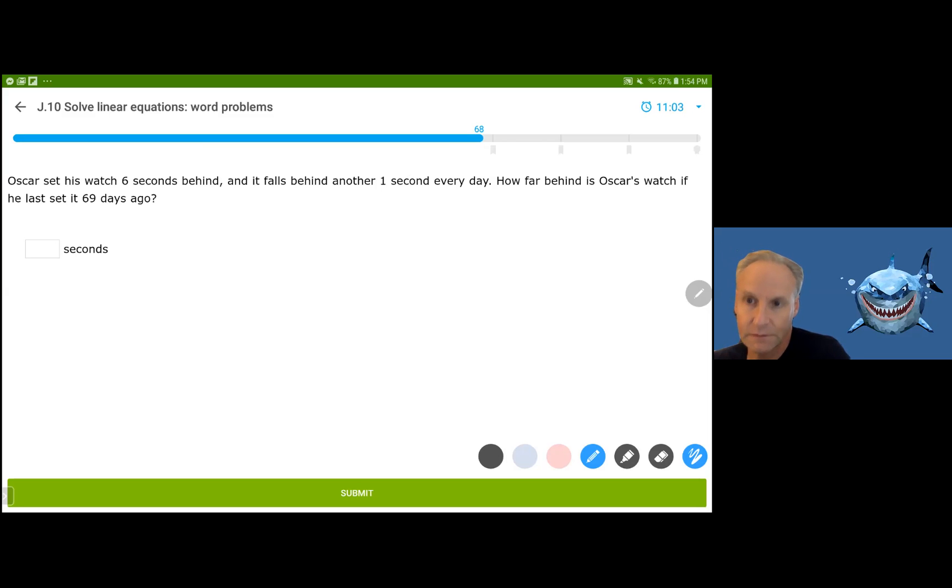Oscar set his watch six seconds behind. If it falls behind another one second every day, how far behind is Oscar's watch if he last set it 69 days ago? Well, the 69 plus the six, I mean, that's clear, but I want you to be able to write the function for this. So let's see, this is going to be lost time. So the total lost time, depending on how many days go by is equal to, this is going to be lost time. So it's six seconds behind. And then he's going to also lose one second every day. These are both really negative values. So we could talk about it as being negatives, or you could talk about time lost, or you could talk about what is his, how does his time register in a zero or a positive sense. Well, this is negative six plus negative one times the 69 days, which means that he's going to be a total of 75 seconds. The negative indicates that it's 75 seconds behind, or we could have just simply said it was seconds away. So it's going to be 75.